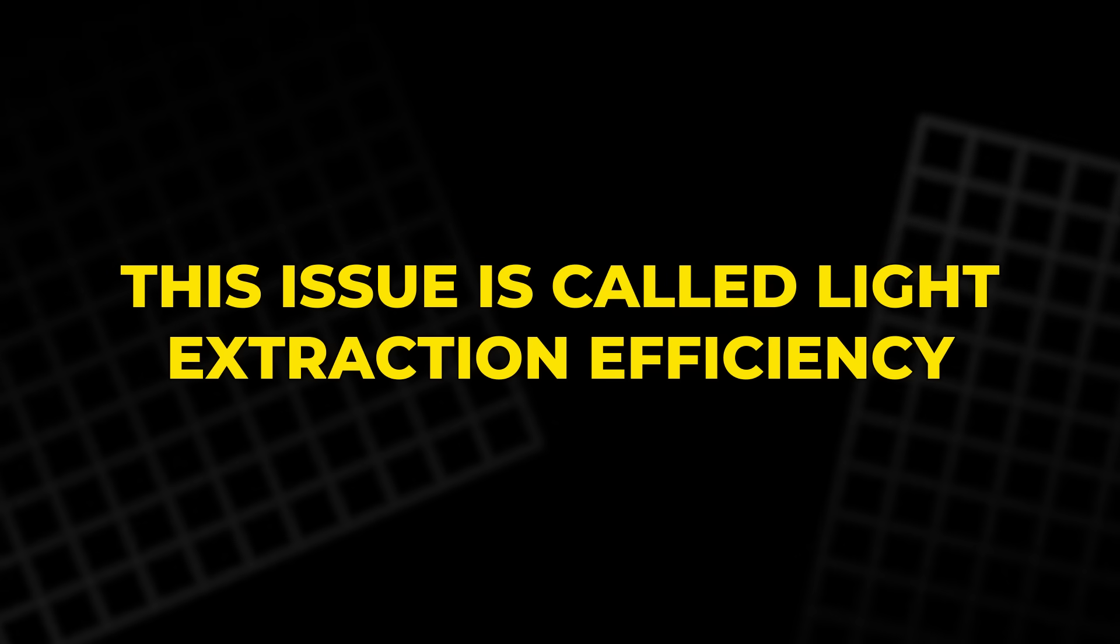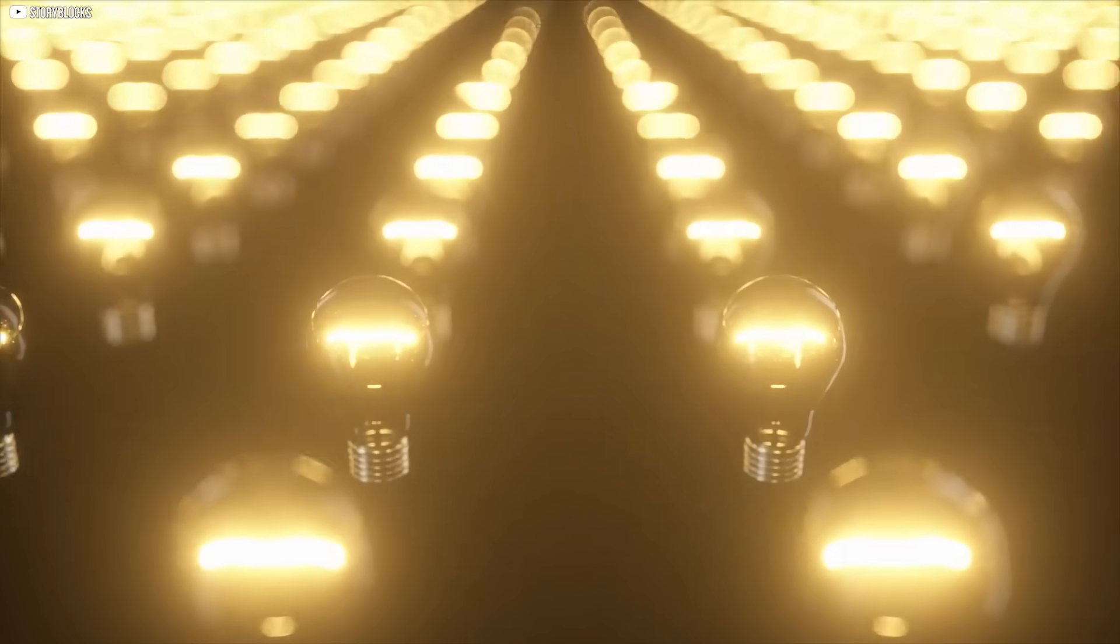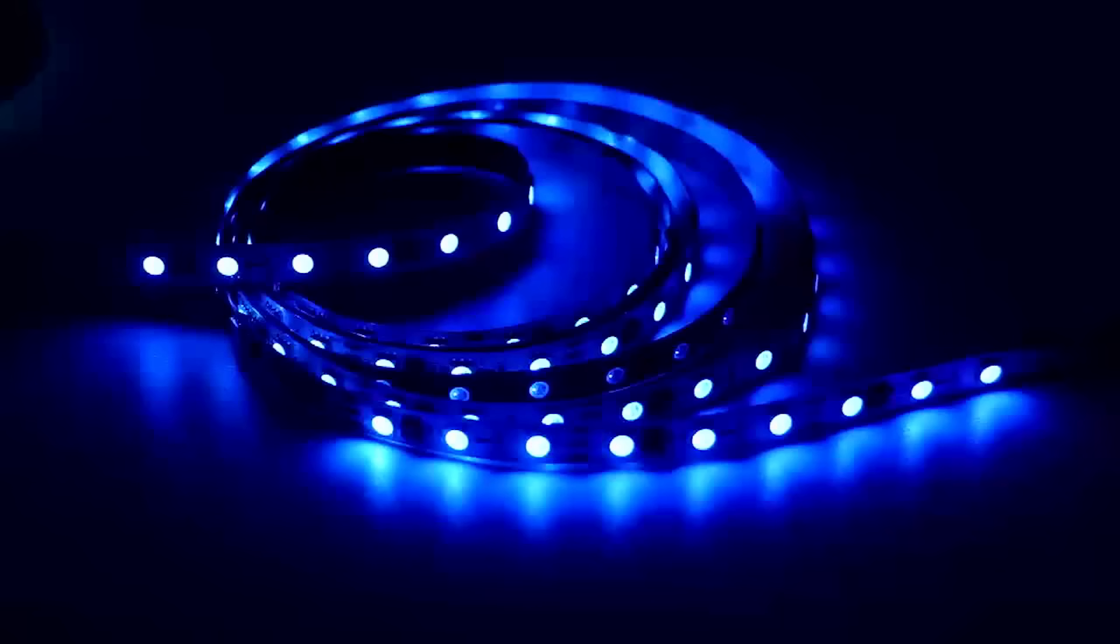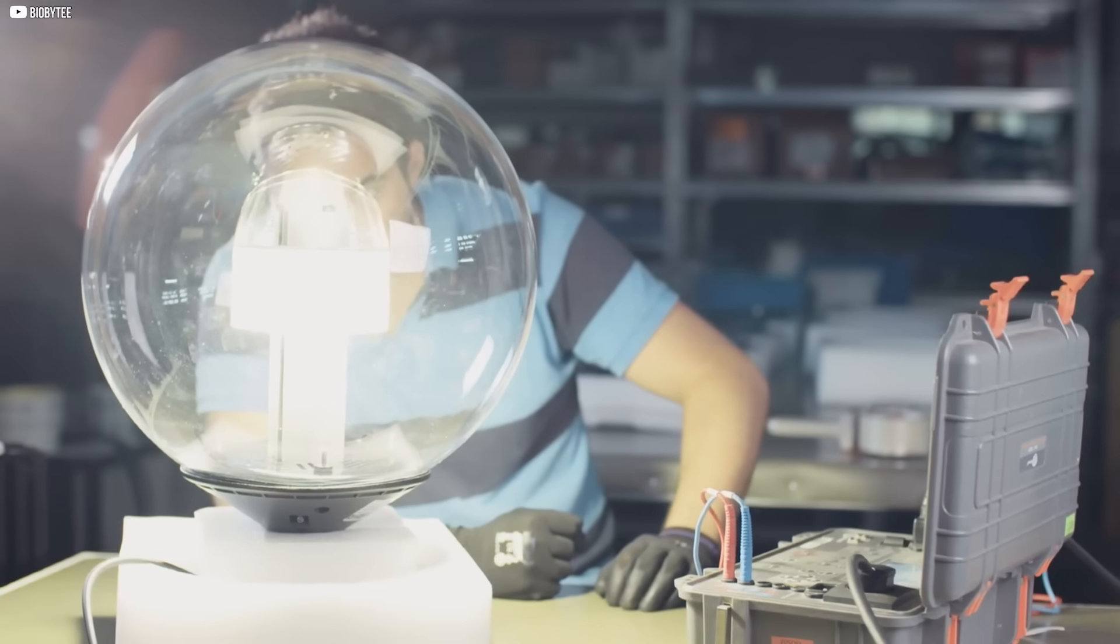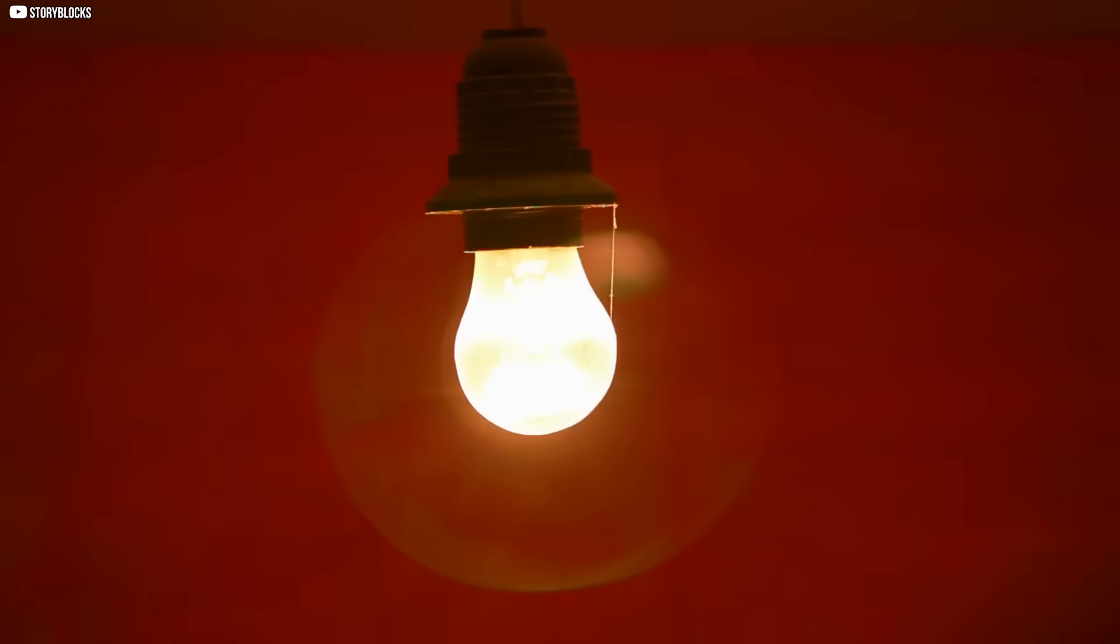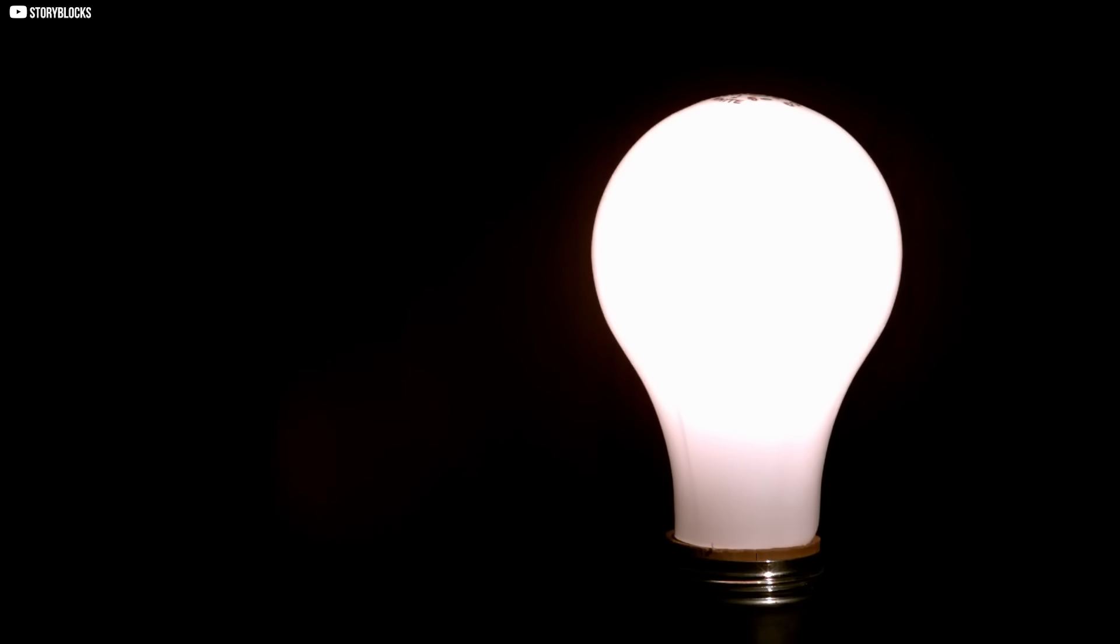This issue is called light extraction efficiency. Imagine a room full of light, but only a few windows to let it out. That's what happens inside an LED. Photons are produced in abundance, but many of them bounce around inside the semiconductor layers. Instead of shining outwards, they get reflected, scattered, or absorbed back into the material as heat.